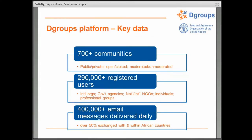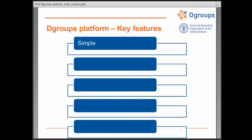The platform is actually enabling the delivery of more than 400,000 email messages daily. This is really the power of the dGroups platform – it really operates from professionals' email inboxes. It doesn't require going to a web-based platform or commenting on threads with multiple logins. It comes directly into the user's individual inbox and operates from there. That's also key to its simplicity.